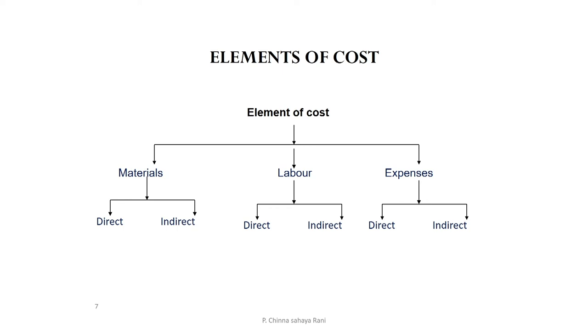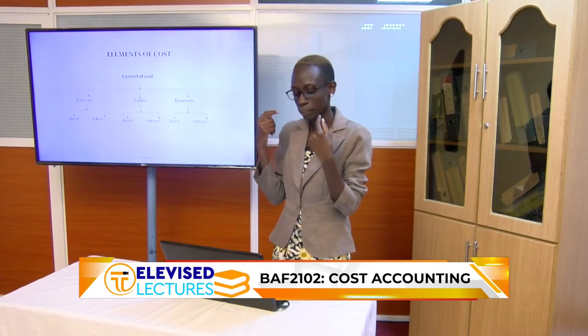A direct cost is directly related or attributable to the good or service you are producing, while an indirect cost is not directly related. For example, in a bakery producing pastries, the raw materials — wheat flour, oil, sugar — are direct materials. An indirect material would be the oven itself, since it produces a variety of pastries. But to get that cake, you must have the wheat flour, which is a direct material.